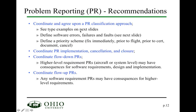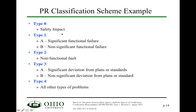For your problem reporting, you can classify various types of problem reports. One classification consists of four types: Type 0 is a problem report with a safety impact. Type 1A has a significant functional failure, or Type 1B a non-significant functional failure. Type 2 is a non-functional fault. Type 3A is a significant deviation from the plans or standards, and Type 3B a non-significant deviation. Type 4 covers all other problems. This is based on an EASA document on software aspects of certification.